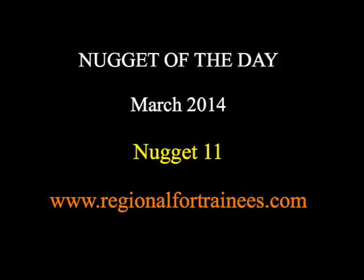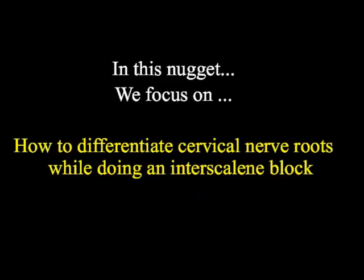Hello guys and welcome to another Nugget of the Day. In this week's Nugget, we are going to discuss how to identify different cervical nerve roots depending on the features of the corresponding cervical vertebral tubercles on the ultrasound. This may be quite important to deposit the local anesthetic solution mainly at C5 and C6 nerve roots which supply the shoulder joint.